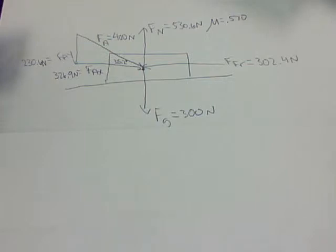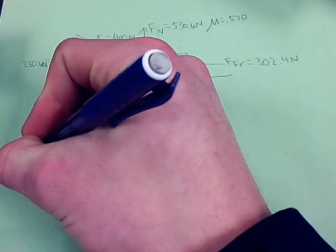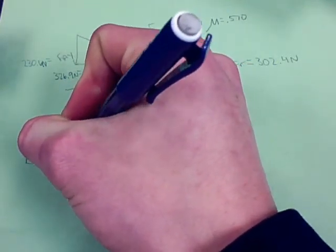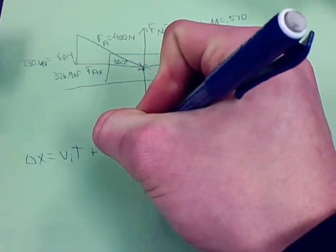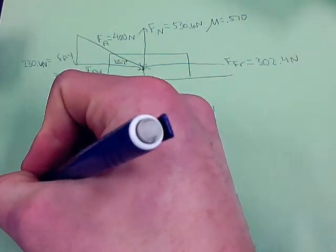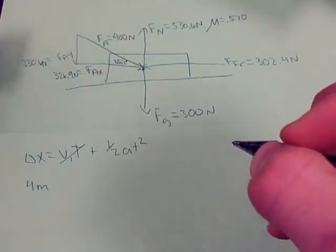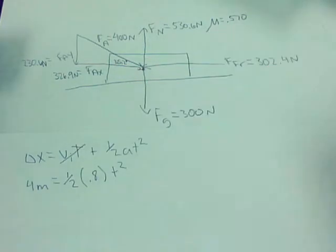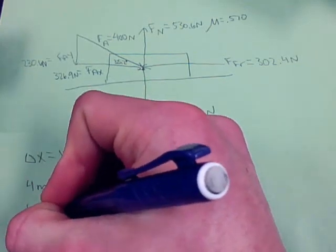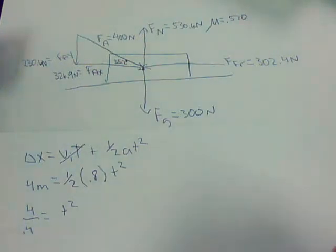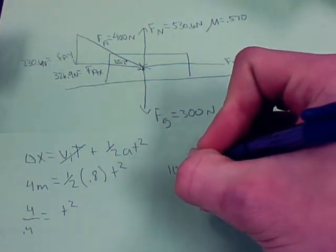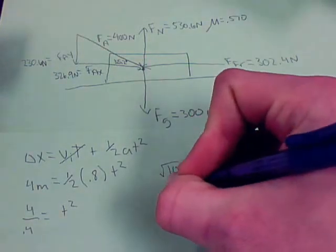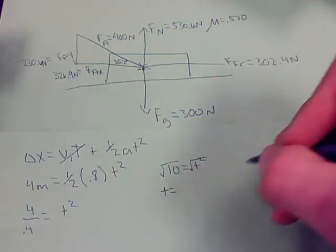So what we're trying to find in this problem is how long it takes to move the box 4 meters starting from rest. So we're going to use the equation delta x equals Vi t plus 1 half a t squared. We know our delta x is 4. Vi t cancels out because Vi equals 0. So we have plus 1 half times .8 t squared. So then we have 4 divided by .4 because 1 half times .8 is .4 equals t squared. Which gives us 10 equals t squared. And we find the square root of both sides. And t equals 3.17 seconds.